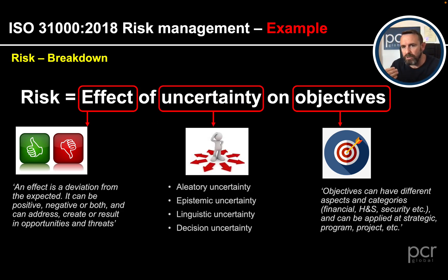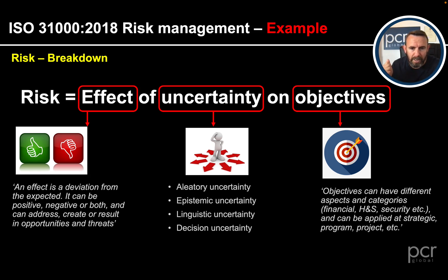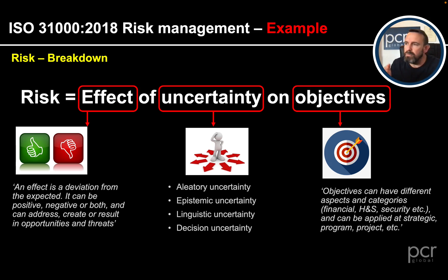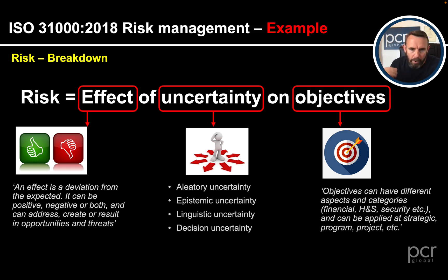The other main word in the definition is uncertainty. Uncertainty isn't really defined within the standard, but there are several types: aleatory uncertainty, epistemic uncertainty, linguistic uncertainty, and decision uncertainty. The two main ones to differentiate between are aleatory and epistemic. Aleatory uncertainty is that uncertainty where even if we dig deeper, we're probably not going to be any clearer about how that instance will turn out.